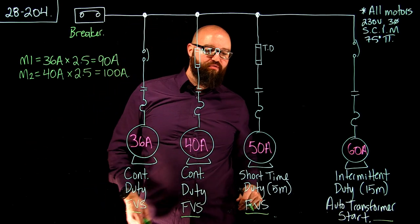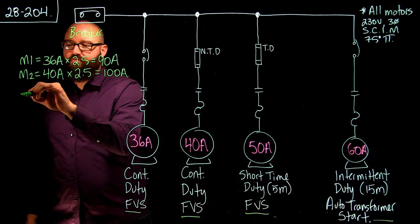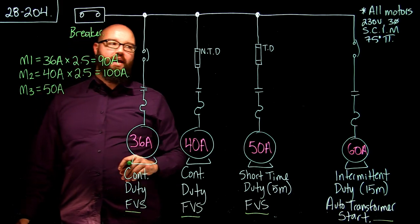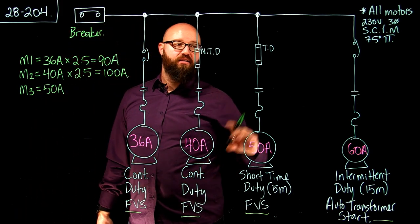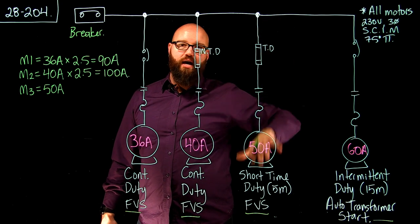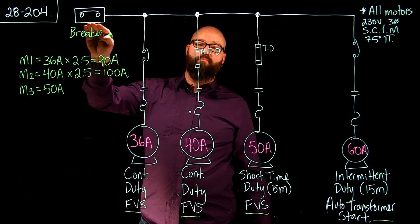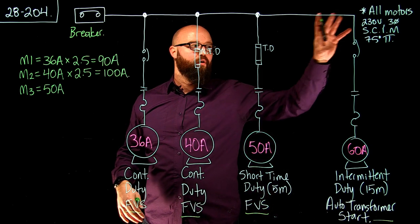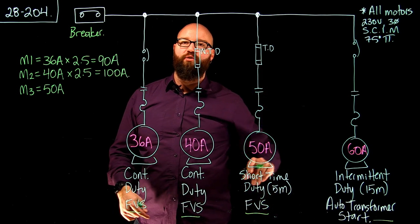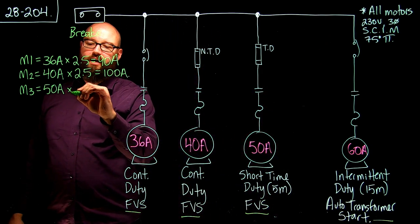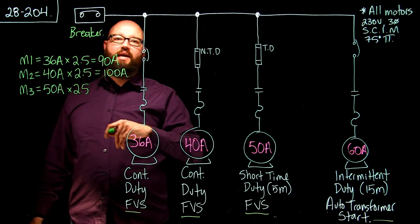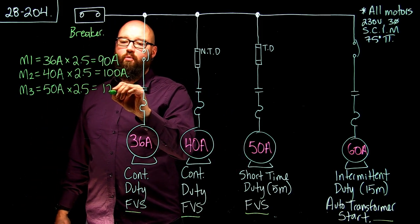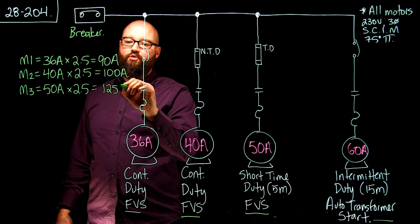Moving to Motor 3: we're going to take our 50-amp FLA. Even though it's protected by a time delay fuse on the branch, I don't care. I'm going to apply the multiplier for a breaker from Table 29 for that particular motor. So 50 amps times 2.5 — because it's a squirrel cage induction full voltage start, three-phase — we end up at 125 amps.